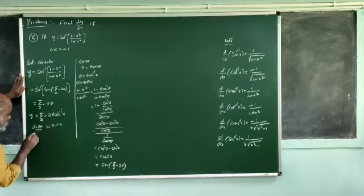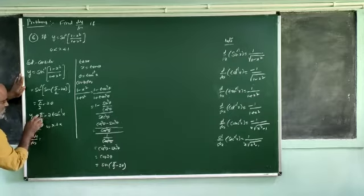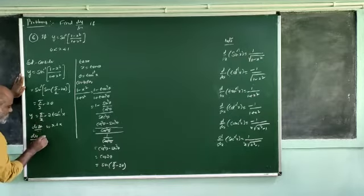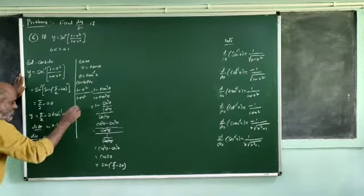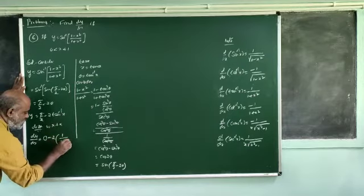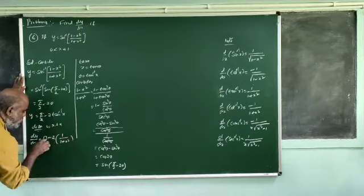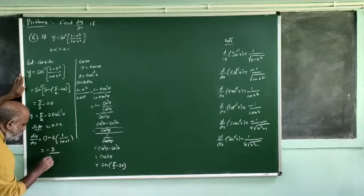Using the differential method, dy by dx: since 5.2 is constant, its derivative is 0 from x. The result is minus 2 divided by 1 plus x squared.